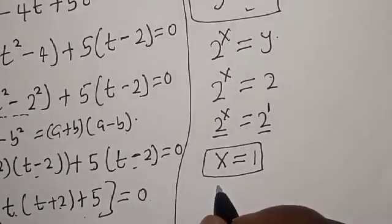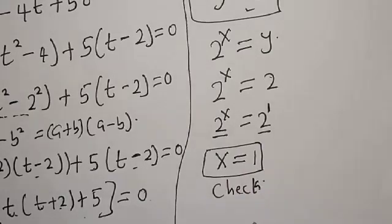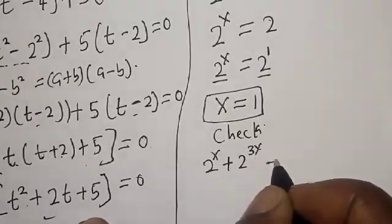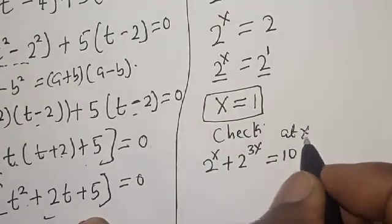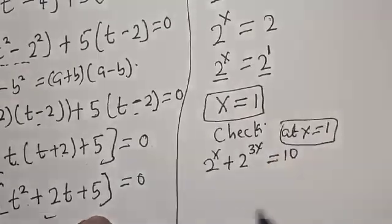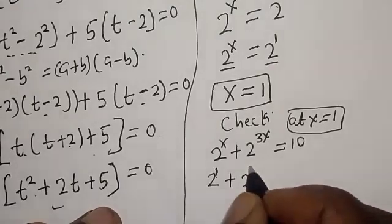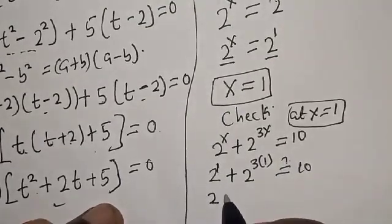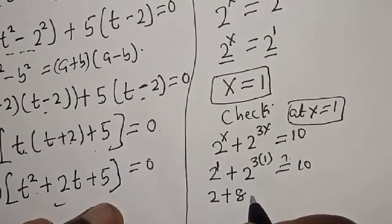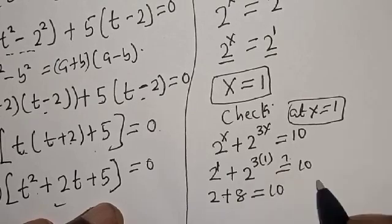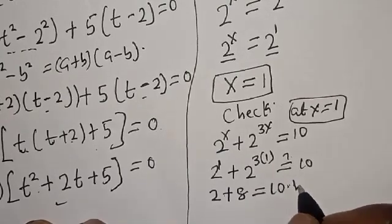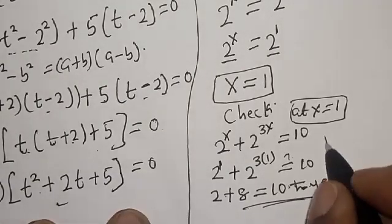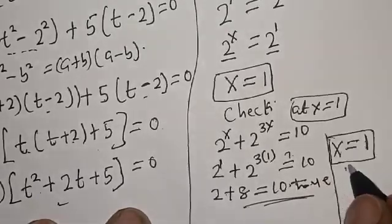We can check to confirm. We have the equation 2 raised to power x plus 2 raised to power 3x equals 10, at x equals 1. Now 2 raised to power 1 plus 2 raised to power 3 is equal to 10. 2 raised to power 1 is 2, plus 2 raised to power 3 is 8, and 8 plus 2 equals 10. So the real value of x is equal to 1. That is our final answer.